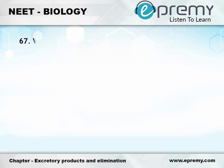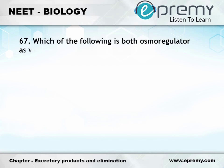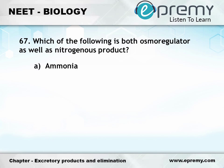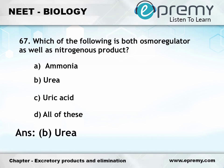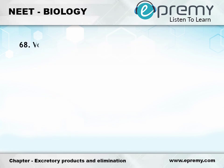Question number 67: Which of the following is both an osmoregulator as well as a nitrogenous waste product? Option A: Ammonia, Option B: Urea, Option C: Uric acid, Option D: All of these. The answer is Option B: Urea.